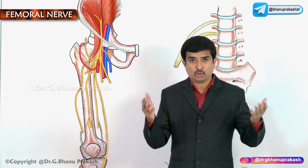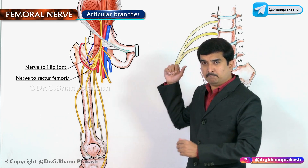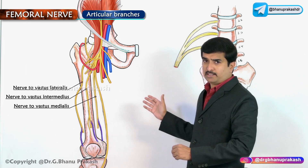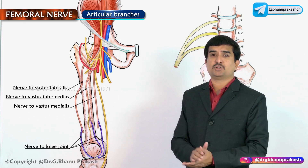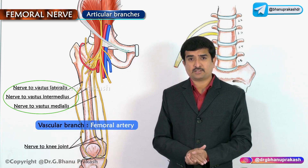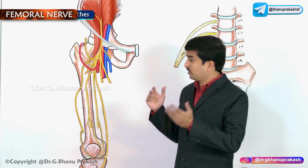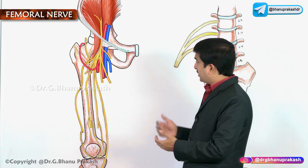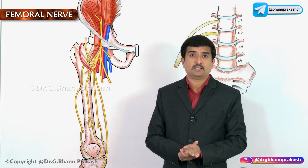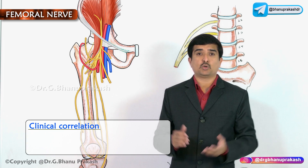Regarding articular branches, the hip joint is supplied by the nerve to rectus femoris, and the knee joint is supplied by nerves to the three vastii. A vascular branch is also given off to the femoral artery. This completes the sensory, motor, articular, and vascular supply of the femoral nerve.